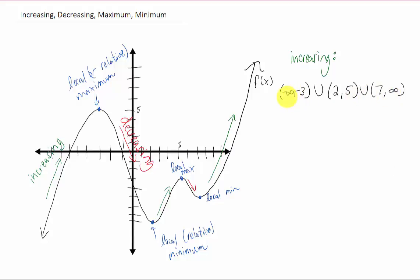Let's do the same thing with decreasing. It looks like our function is decreasing from x equals negative three all the way to x equals two, and also from x equals five to x equals seven. We can combine those two intervals using a union, and that's how you say where the function is decreasing.